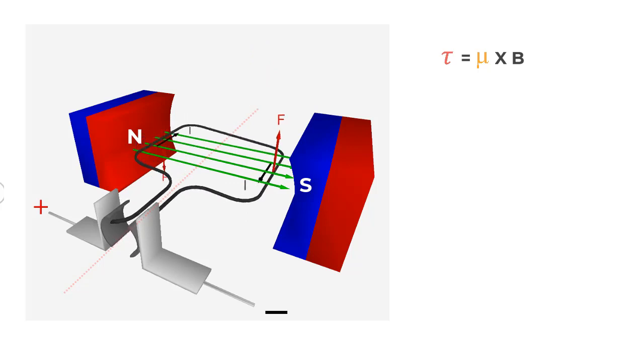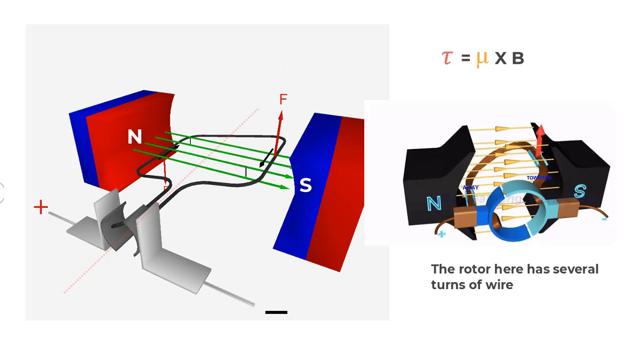This represents a motor in its simplest form, since we are showing a single wire here. But in real motors, the rotor would have several such wire turns, and these multiple turns give higher magnetic moment and therefore torque that helps in spinning larger loads.